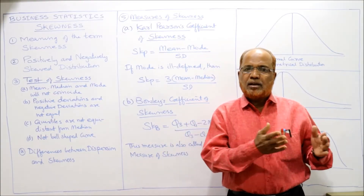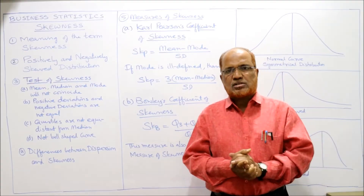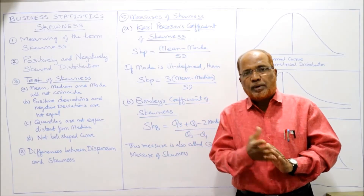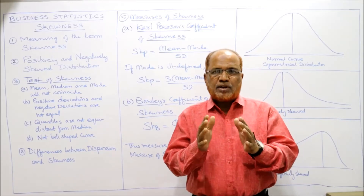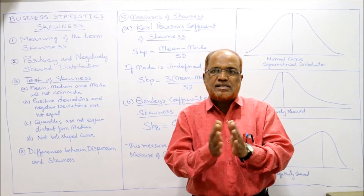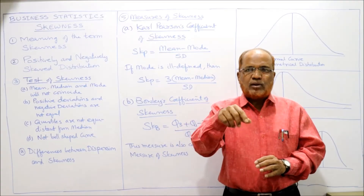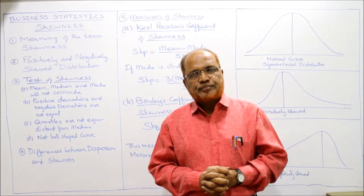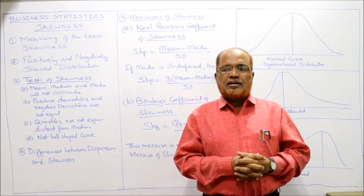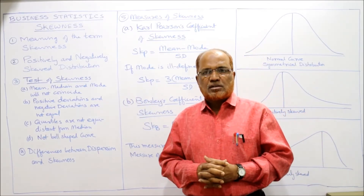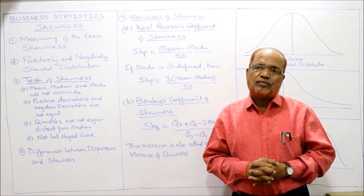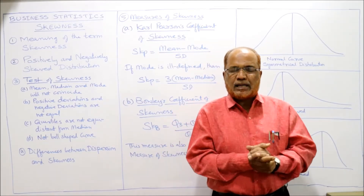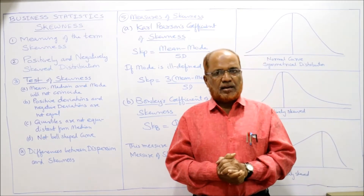Average includes mean, median, mode, geometric mean, and harmonic mean — but by calculating only the average we cannot get complete information about the distribution. Dispersion tells us how individual values are scattered from the central value. Apart from central value and dispersion, the technique called skewness explains the shape of the distribution. To understand skewness, we first divide the distribution into two categories: symmetrical and asymmetrical.